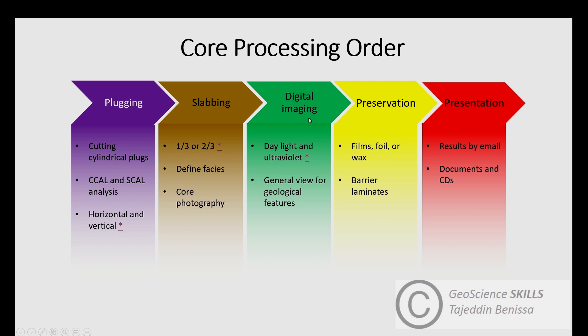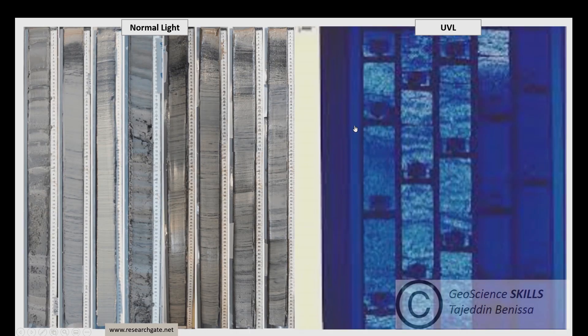Then the next one is digital imaging, which is core photography. In this stage, core samples are placed on a metal platform for photo shooting using a high-resolution camera. There are two types of photos taken for each set of core samples: one with day or normal light and the other one with ultraviolet light.